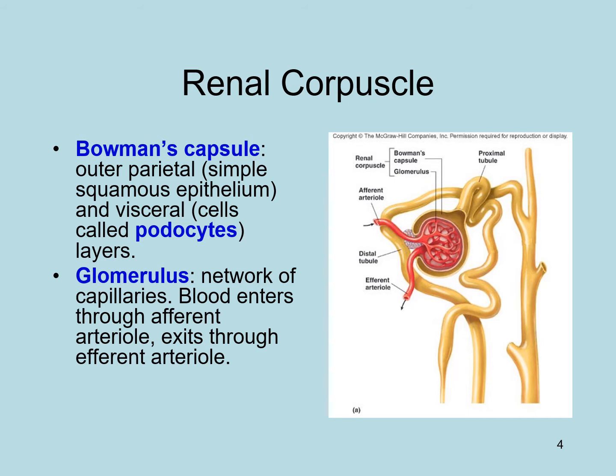Bowman's capsule has two layers: the visceral layer, which contains foot processes (podocytes) and faces the endothelial cells of the capillary, and the parietal layer, which is away from the endothelial cells. The outer parietal layer is simple squamous epithelium, and visceral cells are called podocytes because they have foot processes. The glomerulus is a network of capillaries; blood enters through the afferent arteriole and exits through the efferent arteriole.